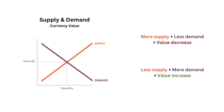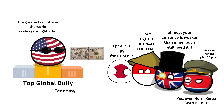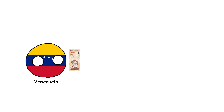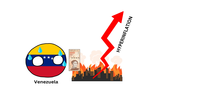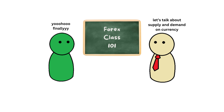So, the value of fiat money comes from supply and demand. That's why the currency of strong economies like the U.S. dollar is higher in value because more people want it. Meanwhile, the currency of weaker economies, like Venezuela, which had hyperinflation, is much lower because nobody, not even Venezuelans, wants it. So in this video, we will look at how supply and demand affect the value of money.